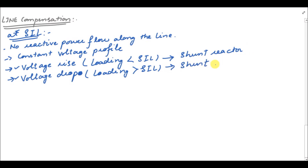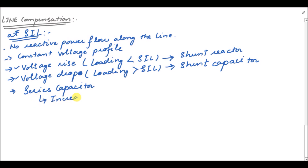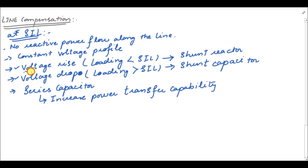In the case of voltage drop we use a shunt capacitor. There is another case in which we use a series capacitor at approximately the mid-point of the transmission line, to increase the power transfer capability of the line. In today's lecture we are going to talk about the first part, which is the addition of a shunt reactor in the transmission line whenever we have a voltage rise condition at the end of the unloaded transmission line.